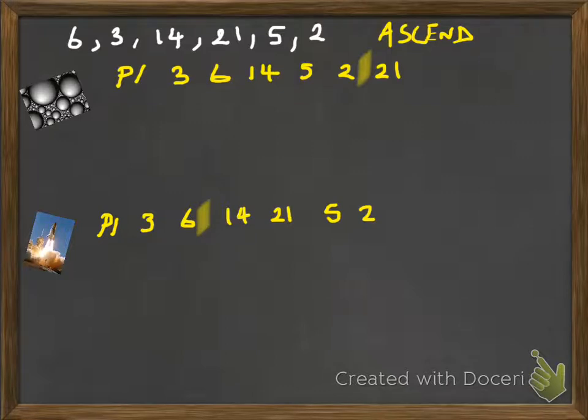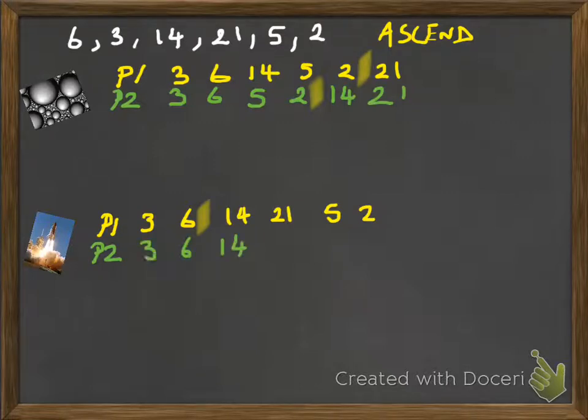Okay into bubble so pass 2. So consider 3 and 6 no change. Consider 6 and 14 no swap. Consider 14 and 5 swap. Consider 14 and 2 swap. And then I put 14 in there because I know that doesn't need to be considered. Down to Shuttle sort and I'll be considering the next pair. So pass 2. 6 and 14 remains as it is. So 3, 6, 14 and my position marker is now there.